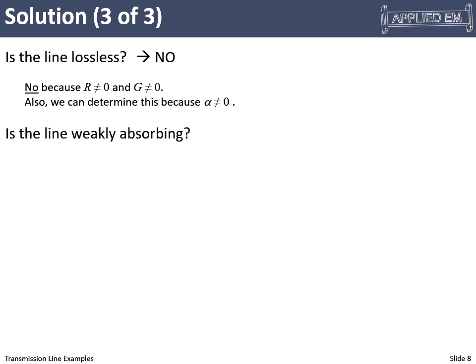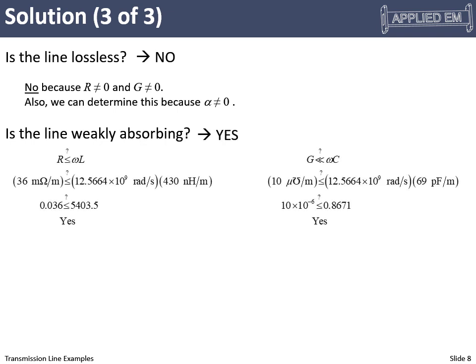Next question, is the line weakly absorbing? Well, yes. So we had two conditions. If one, R has to be less than omega L. So we can plug in our numbers and we can see that R is much less than omega L. We also had G being much less than omega C. And it turns out, yeah, G is much less than omega C. So we do conclude this is a weakly absorbing line.